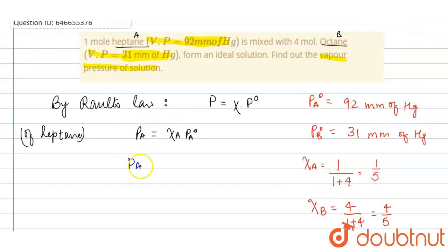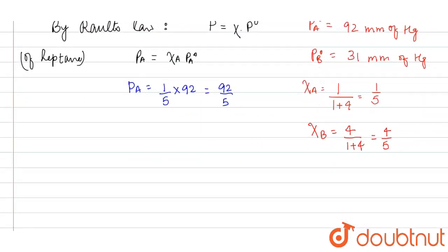It will be like PA is equals to XA. What is XA? XA is one by five. PA naught given is 92, it will be equal to 92 by five. Similarly, for octane...